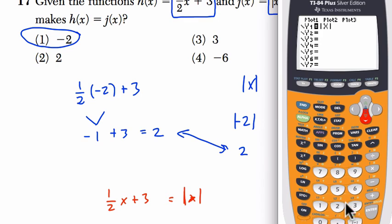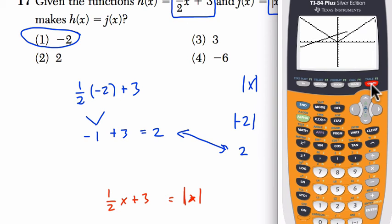Then we enter in 0.5x plus 3, that's our other equation. And we graph these 2 things. Now, if you don't see this, hit zoom 6 for a fit.